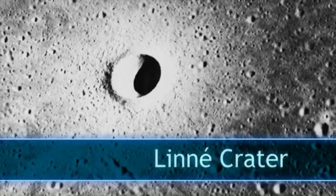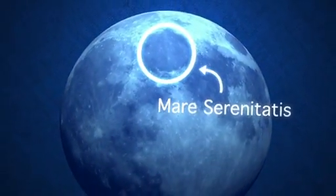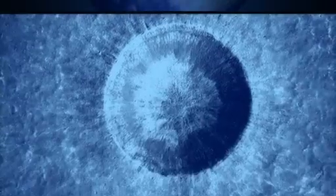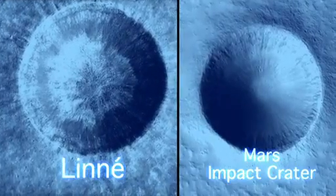The Linnae Crater, a small impact crater located in the western Mare Serenitatis, is extremely young, and scientists have always thought that it might be a great example to use to compare with other craters.